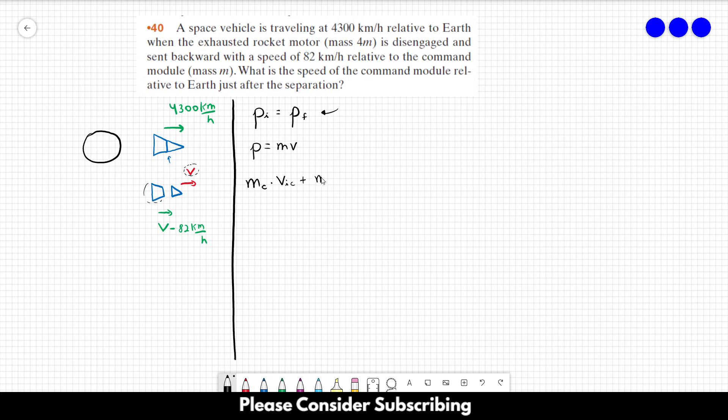...plus the mass of the rocket motor times the initial speed of the rocket must be equal to the mass of the command center times the final speed of the command center plus the mass of the rocket times the final speed of the rocket.